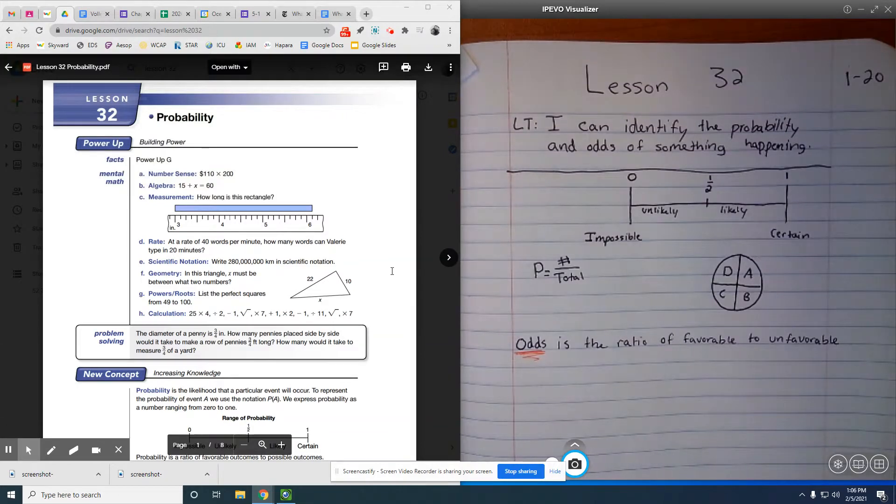Woo! Here we go, 8th grade, lesson 32. I can identify the probability and odds of something happening. Hopefully you know by now we're doing problems 1 through 20.